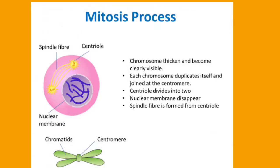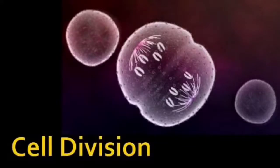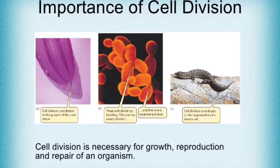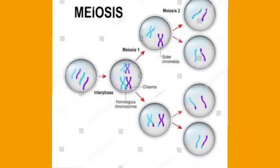All body cells — except germ cells (reproductive cells) — divide through mitosis division. This division helps in the growth, development, and repairing of cells.